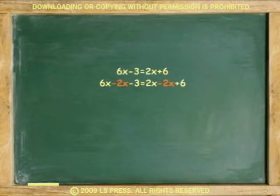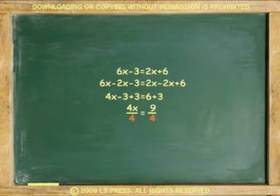Subtract 2x from both sides. Add 3 to both sides. Divide both sides by 4. X equals 9 over 4, or 2.25.